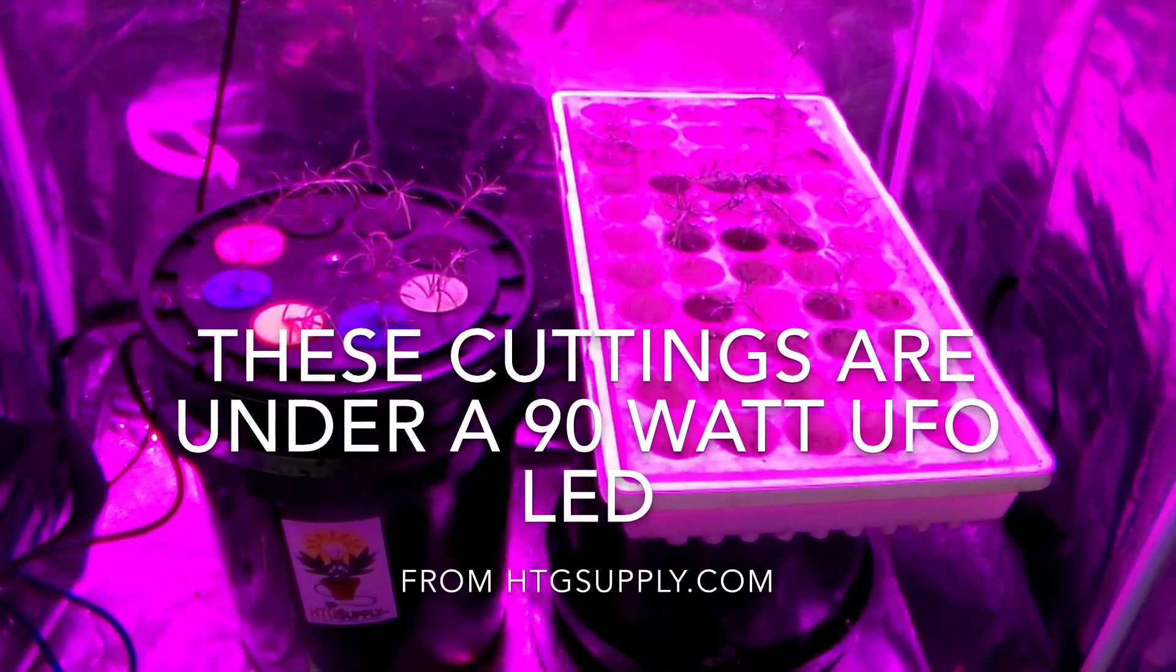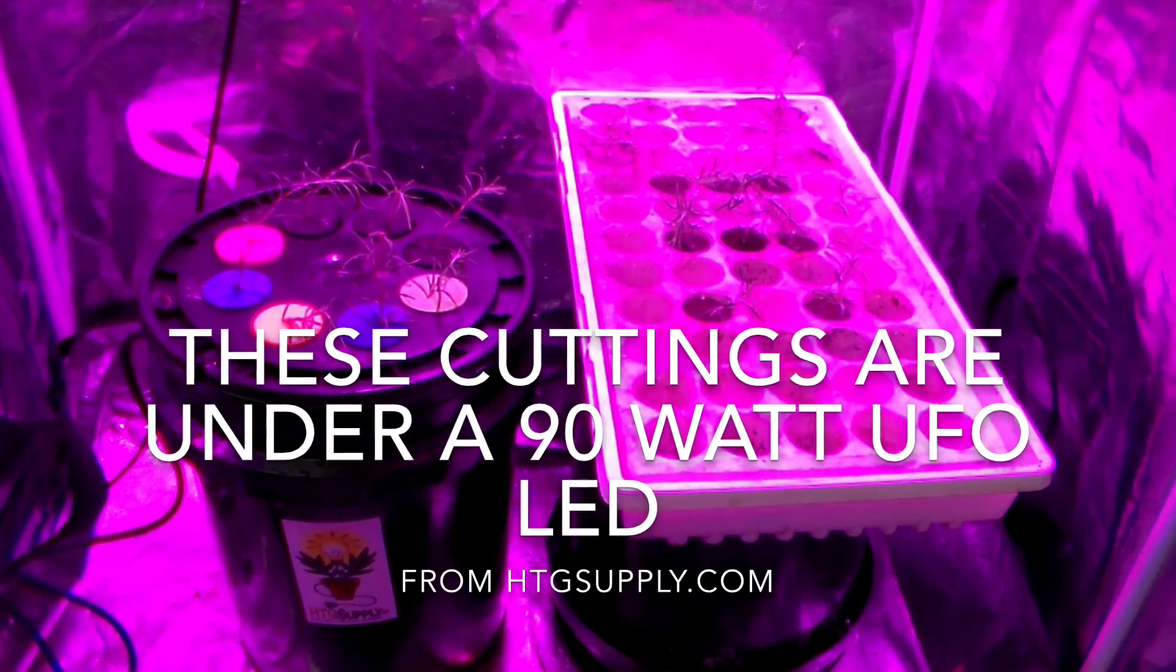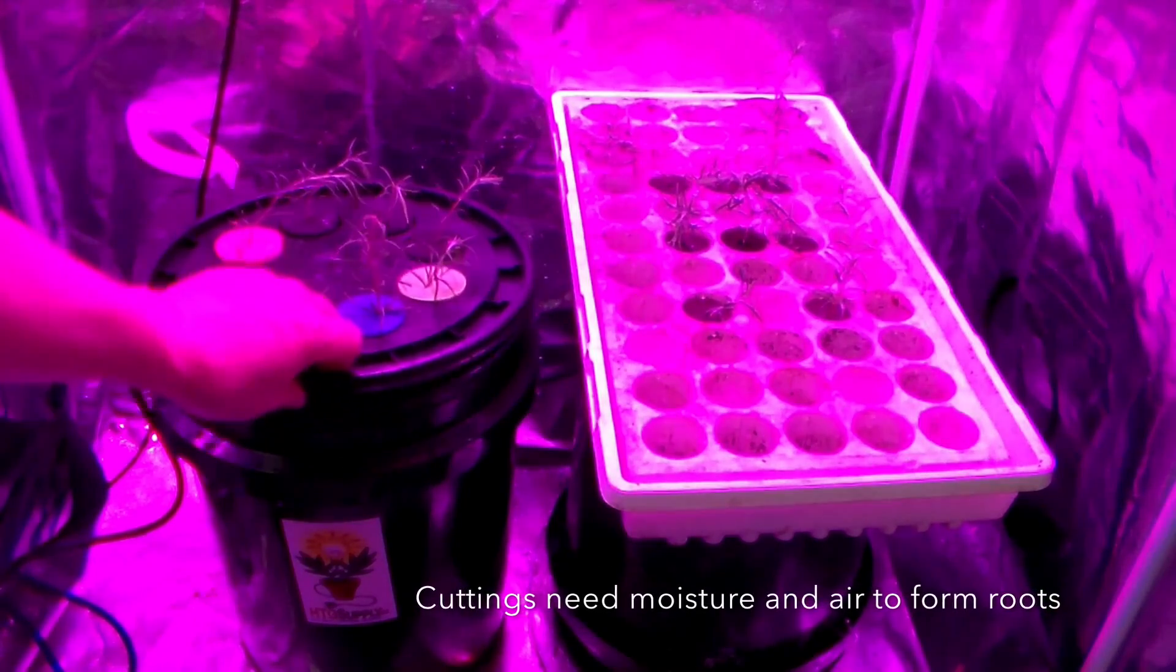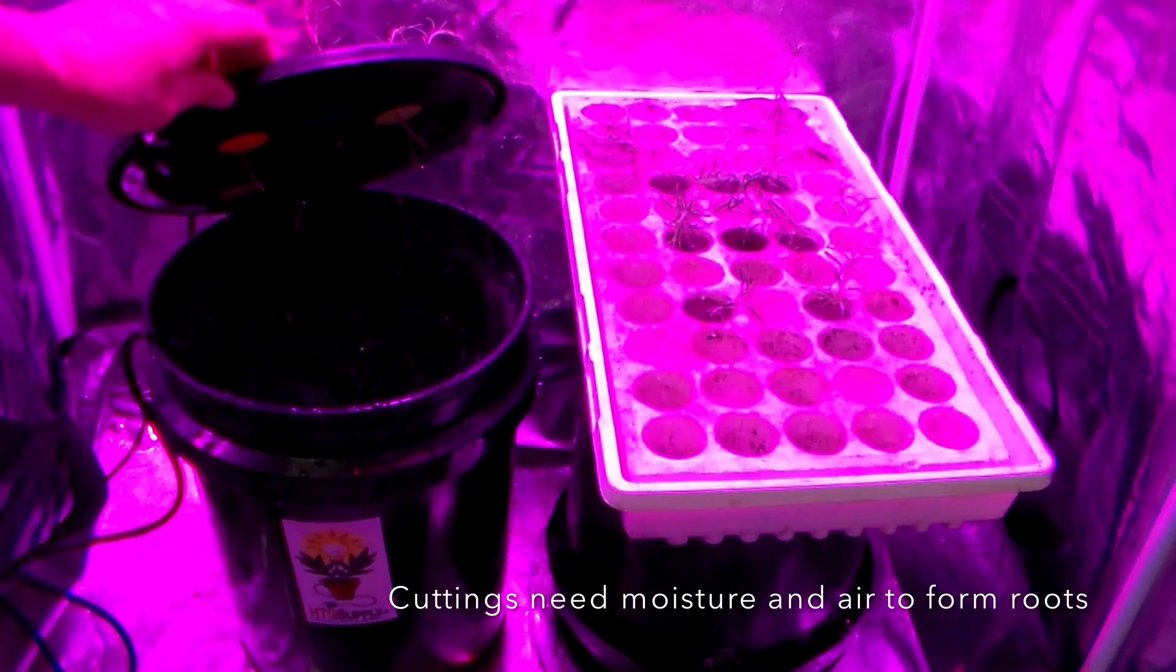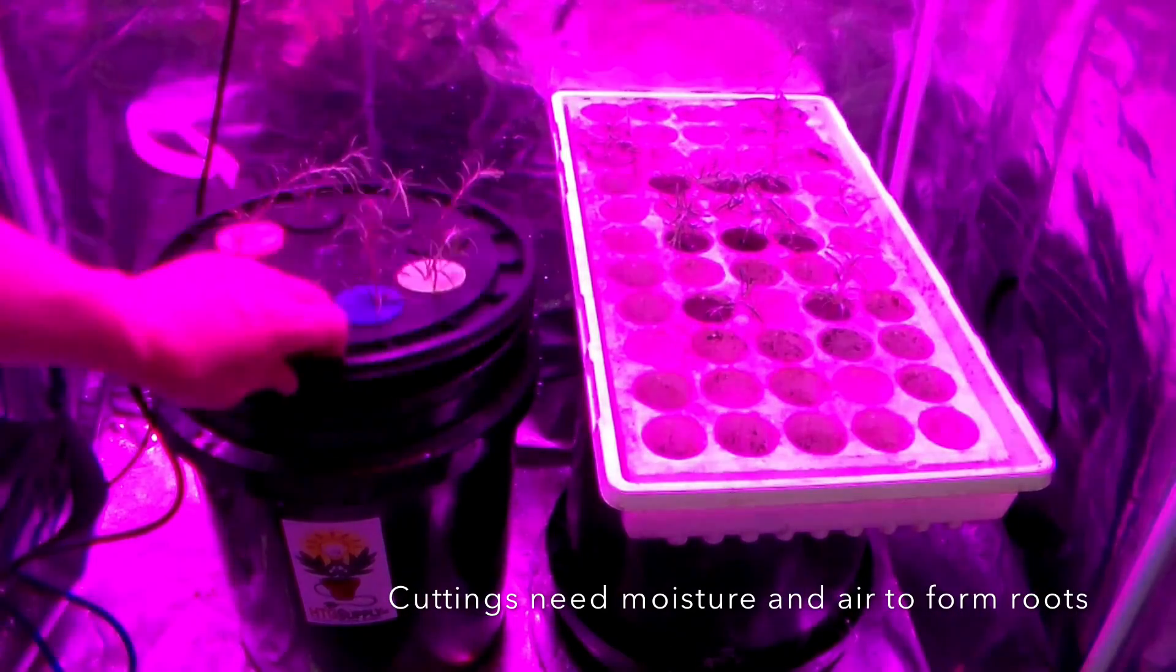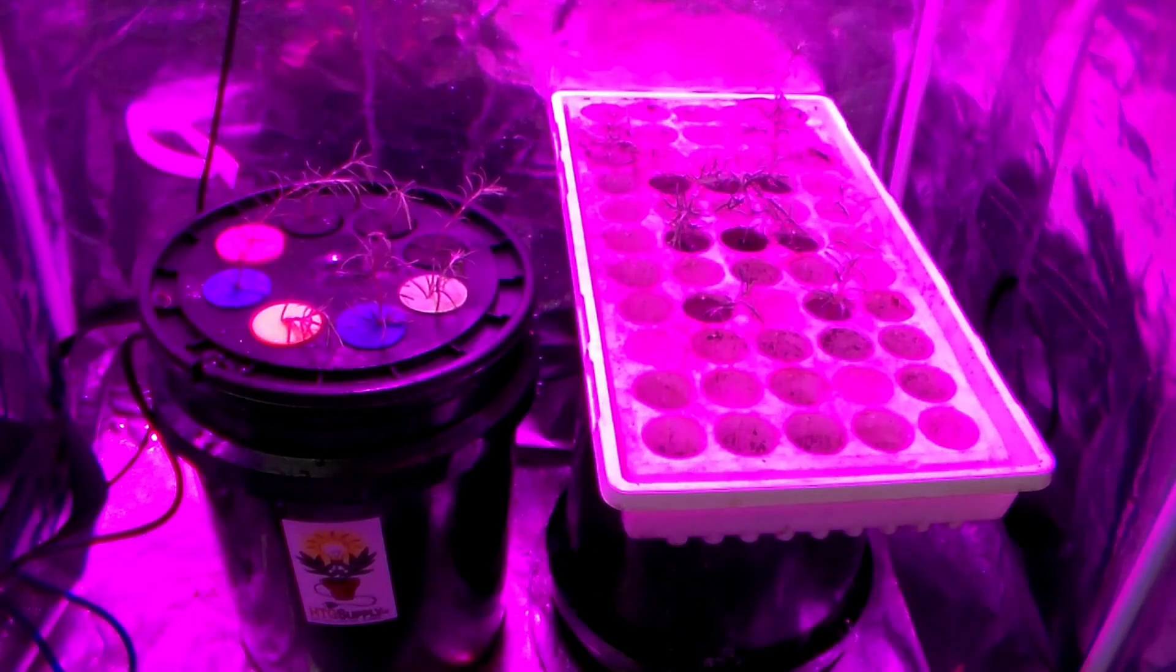What I have here is two different ways to take cuttings. I'm going to do a comparison. On the left here I have some rosemary cuttings that I took and I put them in the clone bucket and you can see the new pump and nozzle creates an environment where the plants are going to be continually wet but enough oxygen is going to get in there so that the plants can form roots.